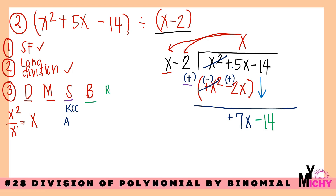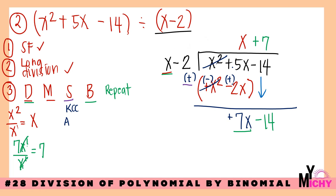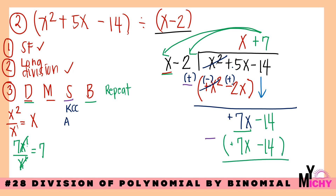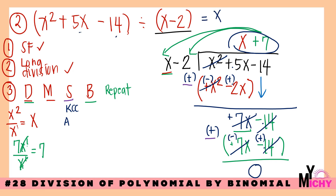Repeat the cycle. Divide: 7x divided by x — the x's cancel, leaving positive 7. Write 7 on top. Multiply: positive 7 times x equals 7x, and positive 7 times negative 2 equals negative 14. Write 7x minus 14 below. Subtract with KCC: positive 7x becomes negative 7x, negative 14 becomes positive 14. Then: positive 7x and negative 7x cancel to 0; negative 14 plus positive 14 equals 0. The answer is x plus 7.